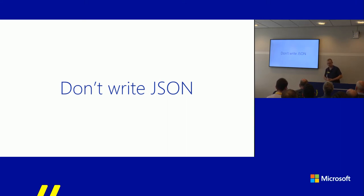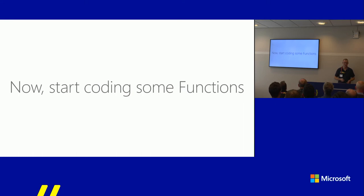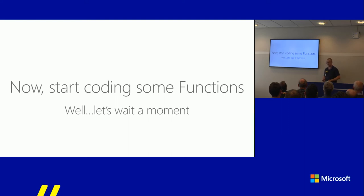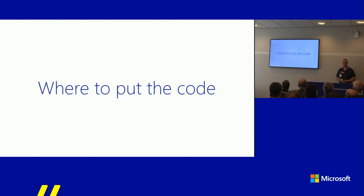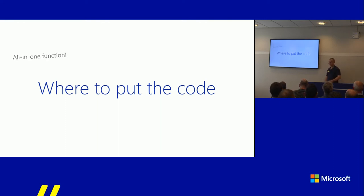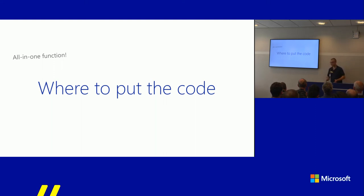Now that we've covered function.json and how to specify bindings, you could start writing code. But there are still some considerations to think about. One important one is: where will you put all your code? A lot of tutorials advise you to just put it all in the Azure portal in the .csx file you get by default, since functions are small and everyone can understand it. Don't do this — for obvious reasons: no source control, no code reviews, and more.